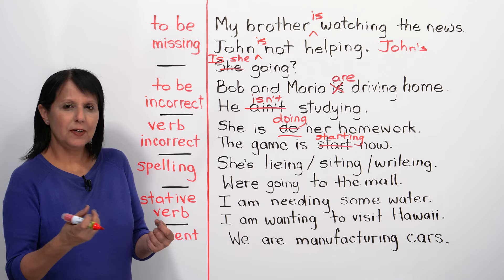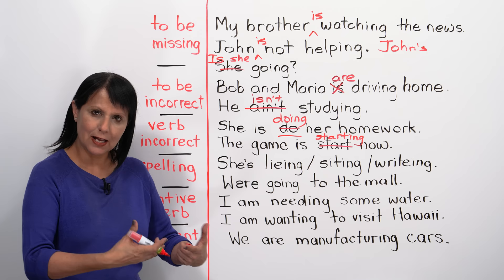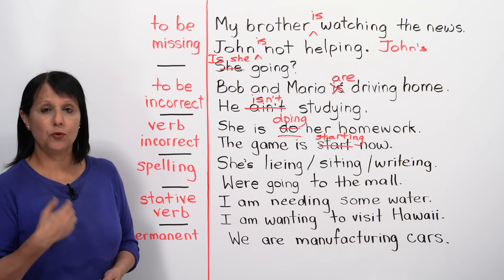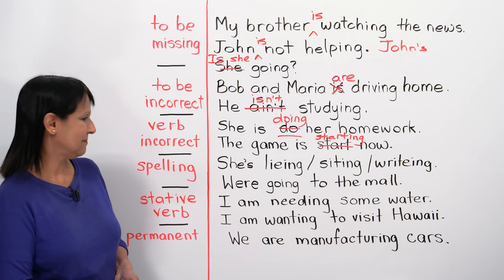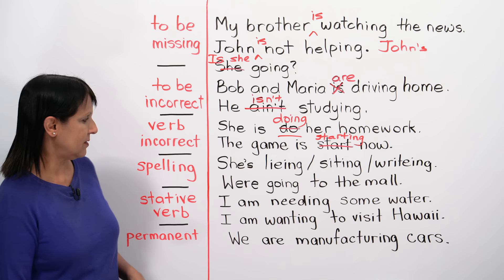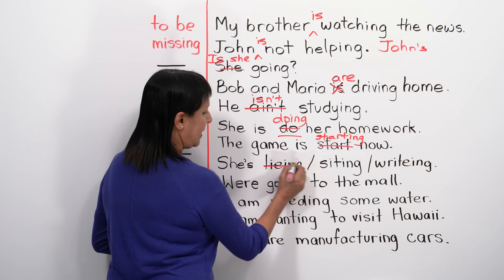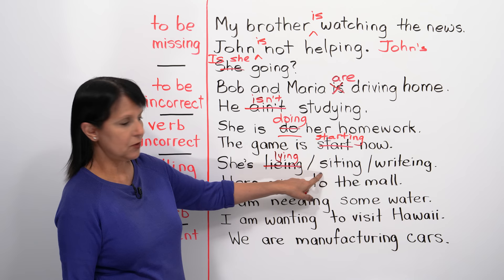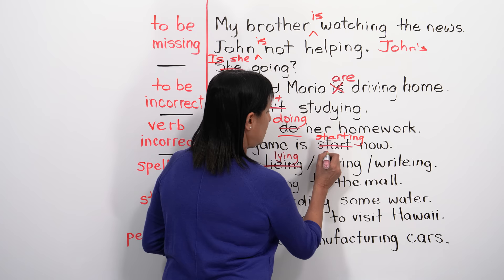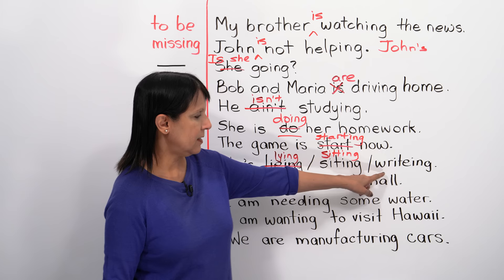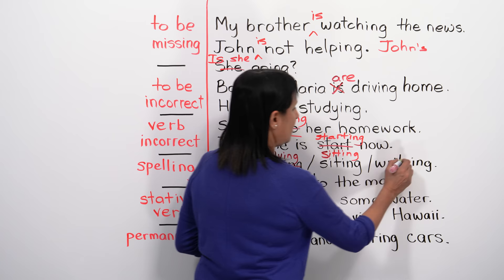Spelling mistakes are also common. For example, 'She's lieing' should be 'She's lying' — L-Y-I-N-G. 'She's siting' should be 'She's sitting' — consonant, vowel, consonant, so we double the last letter. And 'She's writting' should be 'She's writing' — the verb 'write' ends in -e, so we drop the e. Also, 'were going to the mall' is missing the apostrophe — it should be 'we're going to the mall.'